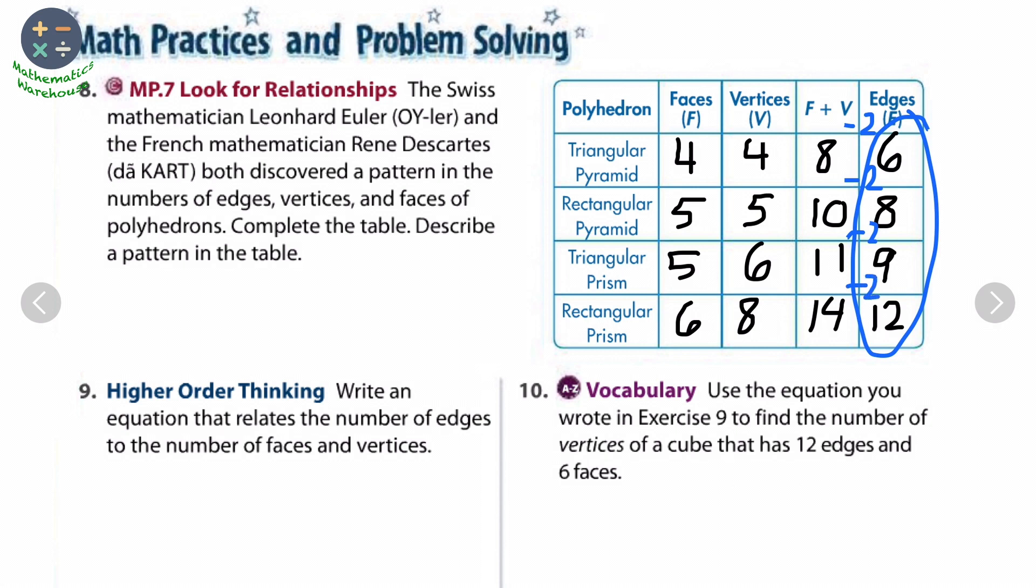At number nine, write an equation that relates the number of edges to the number of faces and vertices. We can say number of edges equals number of faces and number of vertices all minus two.